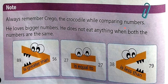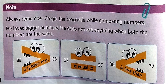Always remember the crocodile analogy. While comparing, the crocodile loves the bigger number. It does not eat anything when both numbers are equal — it just sits quietly. For example, 89 and 56: the crocodile eats 89. For 39 and 79: the crocodile eats 79. When both sides are the same, we use the equal symbol.